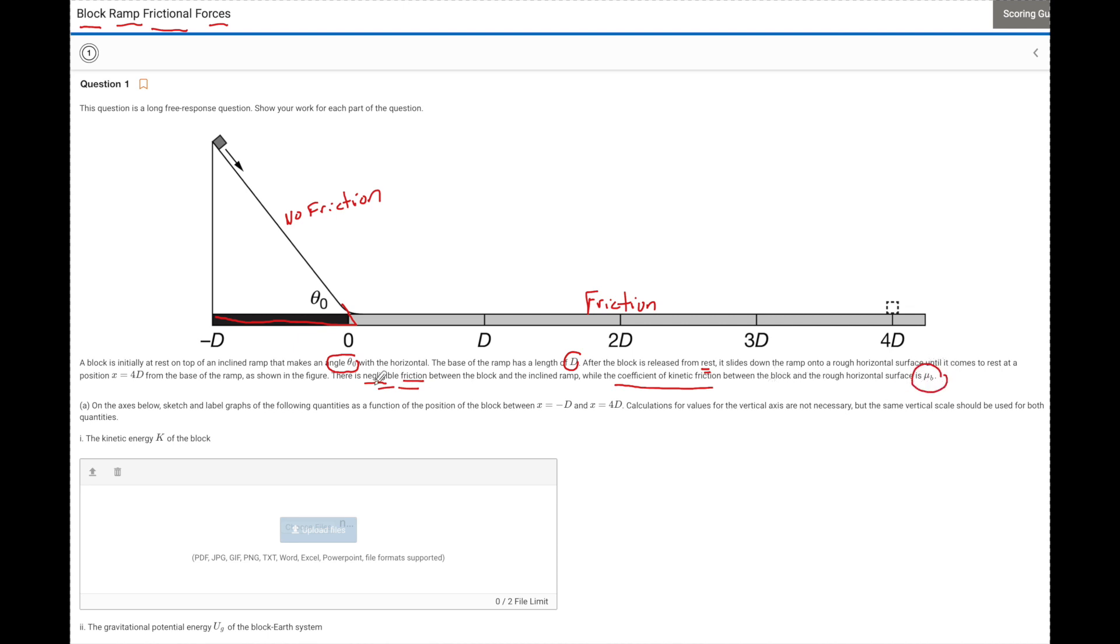The first question says on the axis below, and I'm going to scroll down, they want us to label on the graph the following quantities: kinetic energy and gravitational potential energy from minus D to 4D. Calculations for the vertical scale are not necessary, but the same vertical axis should be used for both.